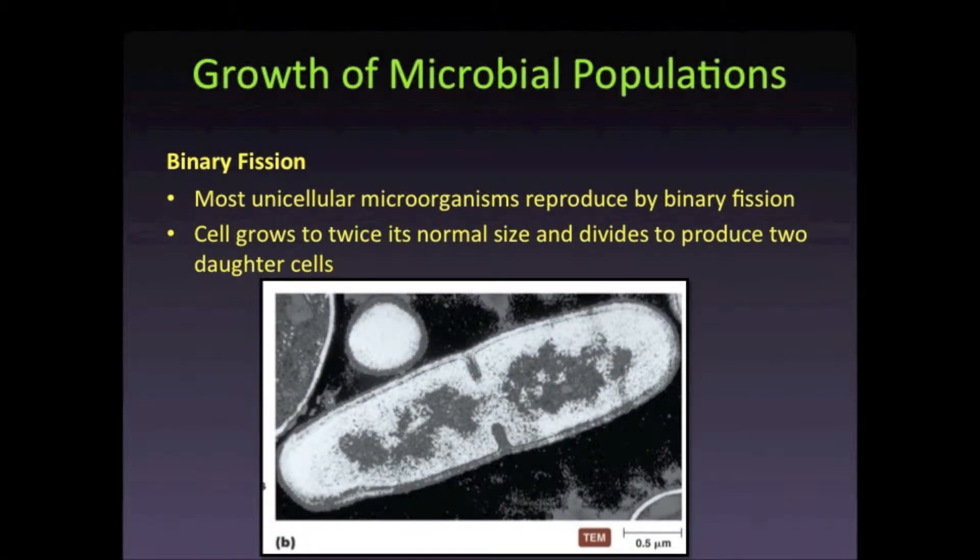Bacteria mainly reproduce asexually through a process known as binary fission. A bacterial cell will undergo metabolism and grow to be about twice its normal size, and then undergo the process of binary fission to produce two daughter cells that are genetically identical to the parent cell.